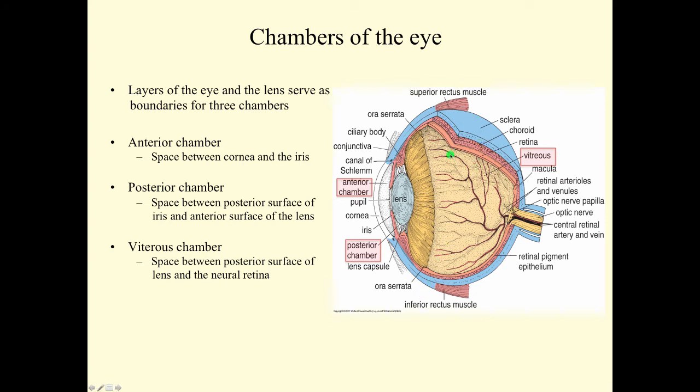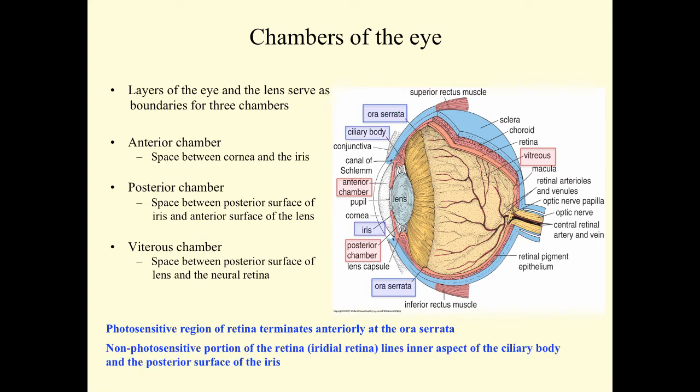In this cutaway of the eyeball, you can see the three walls of the eye: the sclera, the choroid, and the retina. The photosensitive retina terminates anteriorly at the ora serrata, and that would be in approximately this region in the retina. The non-photosensitive portion of the retina is called the iridial retina, and it lines the inner aspects of the ciliary body and the posterior surface of the iris. You'll see that as we go along in the podcast, and you'll see it nicely in our laboratory.